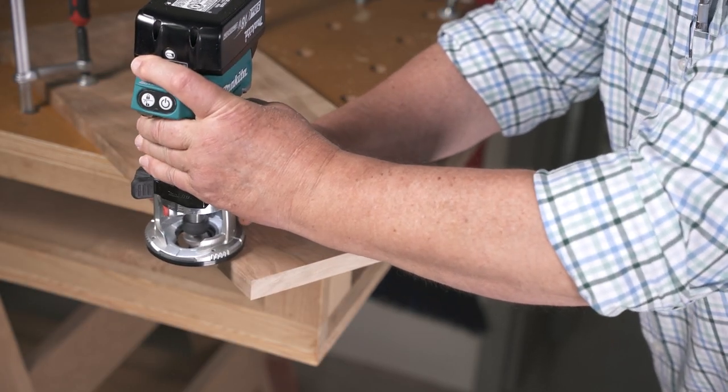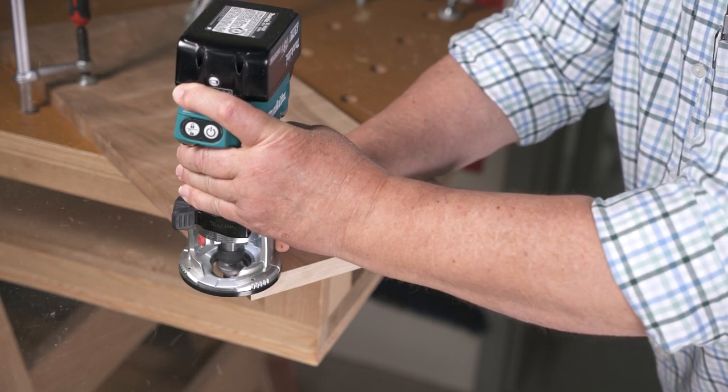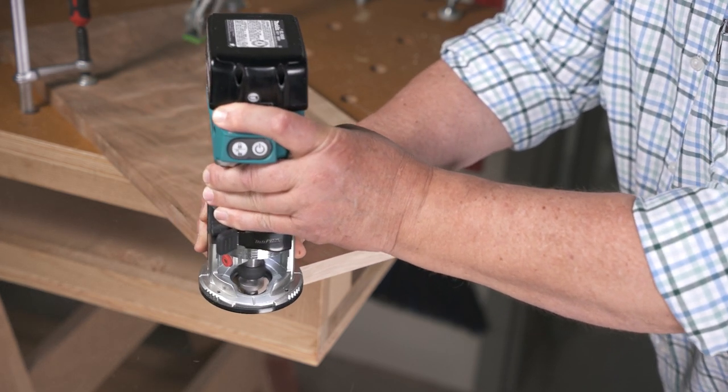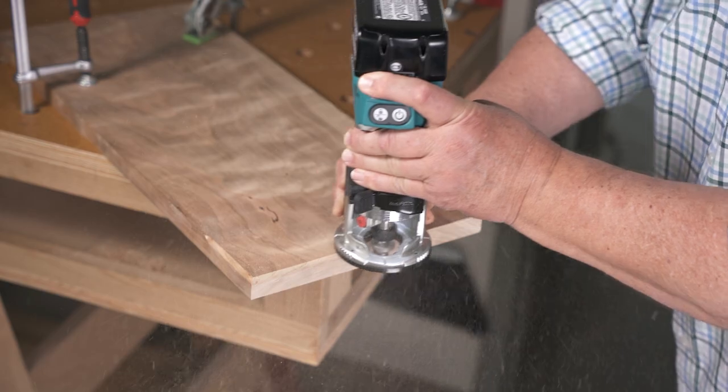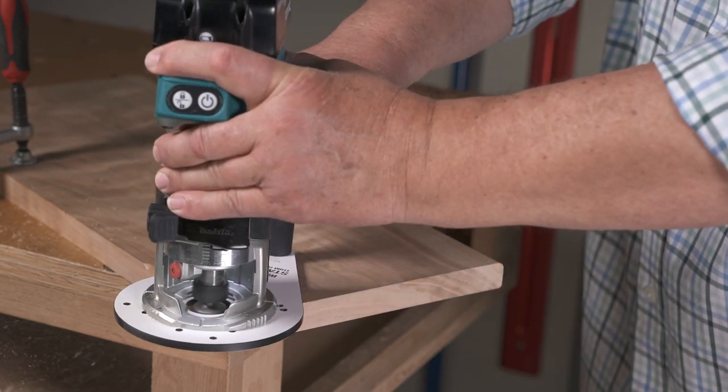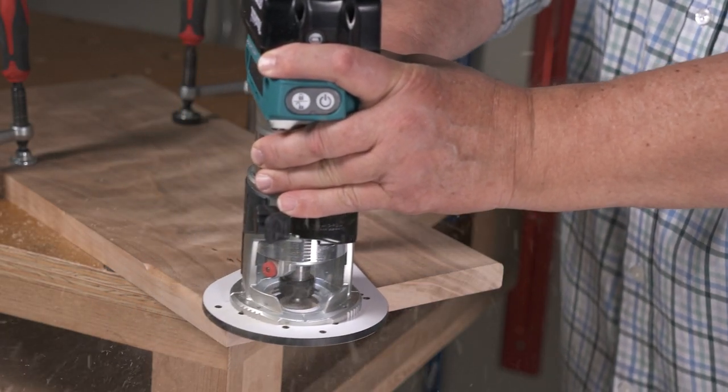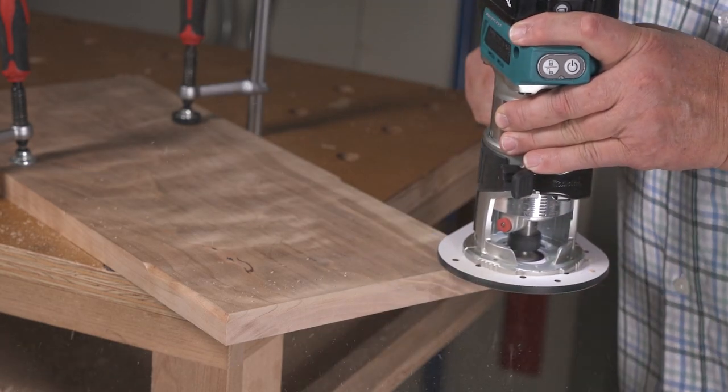Compact trim routers put a lot of power in the palm of your hand, but their tiny bases can wobble at the worst possible moment. Give your trim router a more solid footing with Woodpecker's StableMax trim router base.